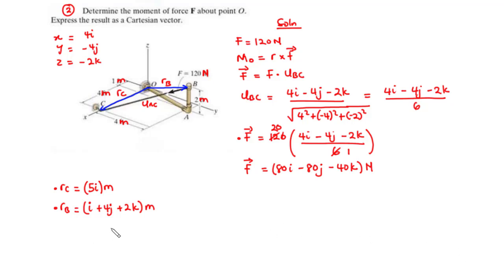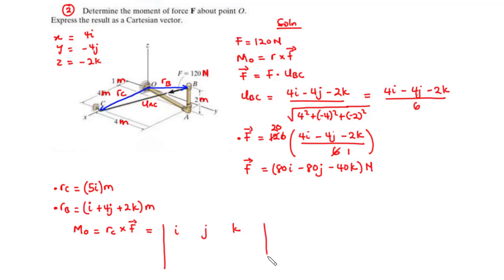The moment about point O is given by the cross product of RC and F. We construct a 3×3 determinant: first row I, J, K; second row the coefficients of RC: 5, 0, 0; third row the coefficients of F: 80, negative 80, negative 40.